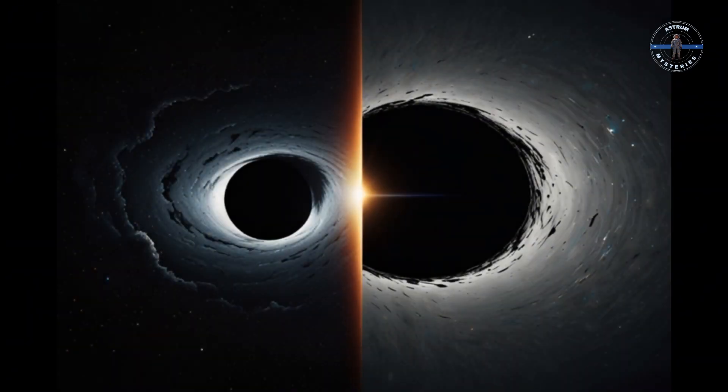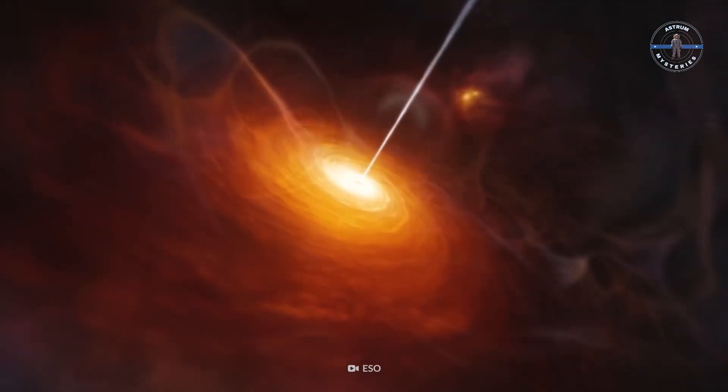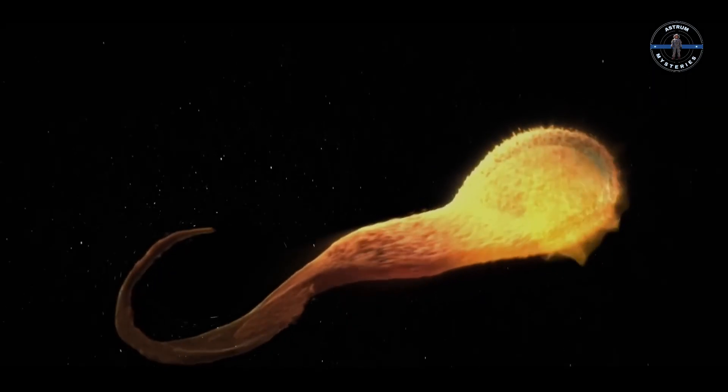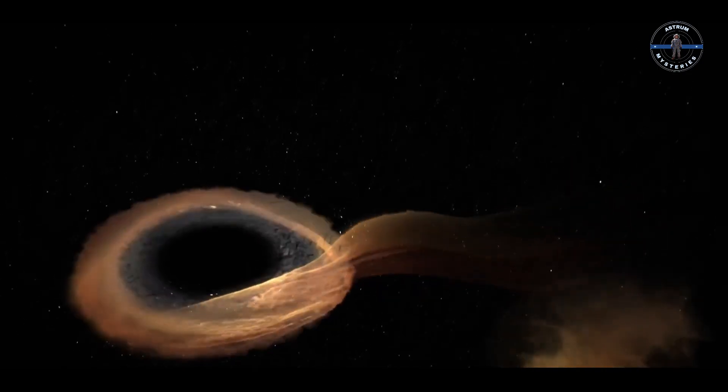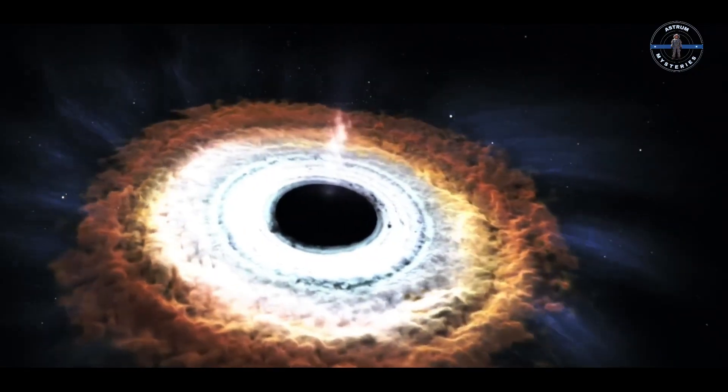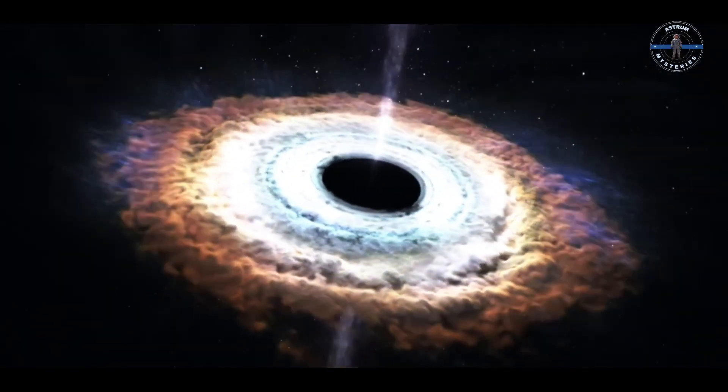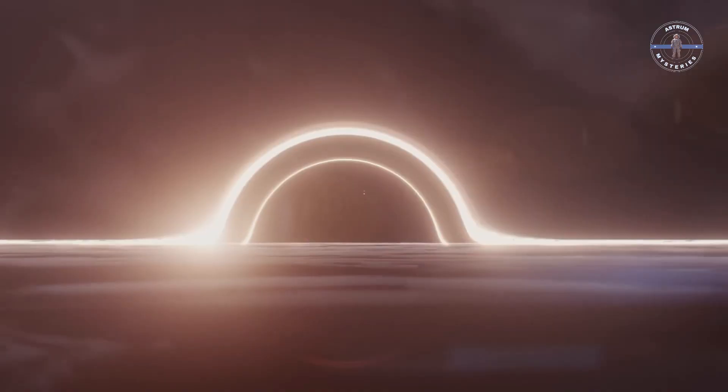Black holes are the cosmic kings of destruction. Born from the death of massive stars, they form when gravity crushes a star into a singularity, a point so dense that it bends the fabric of spacetime itself. Their power? Unstoppable. Anything that crosses the event horizon is lost forever. But here's the twist, what happens to the matter they consume? Where does it all go?